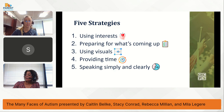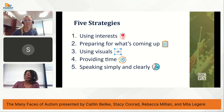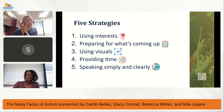Aprenderá cinco estrategias simples y efectivas que pueden tener un gran impacto en la calidad de vida de las personas en el espectro. Estas estrategias son el uso de intereses, la preparación para lo que está por venir, el uso de imágenes, proporcionar tiempo, y hablar de forma simple y clara. Estas estrategias pueden ser usadas por cualquier persona y en cualquier lugar para apoyar a personas con TEA.